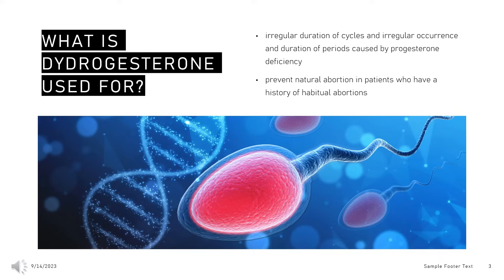What is Dydrogesterone used for? It is used to treat irregular duration of cycles and irregular occurrence and duration of periods caused by progesterone deficiency. It is also used to prevent natural abortion in patients who have a history of habitual abortions.